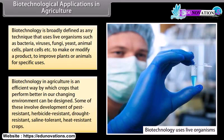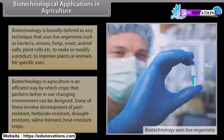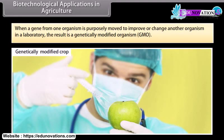Biotechnology in agriculture is an effective way by which crops that perform better in a changing environment can be designed. Some of these involve development of pest-resistant, herbicide-resistant, drought-resistant, saline-tolerant, and heat-resistant crops. When a gene from one organism is purposely moved to improve or change another organism in a laboratory, the result is a genetically modified organism, GMO.